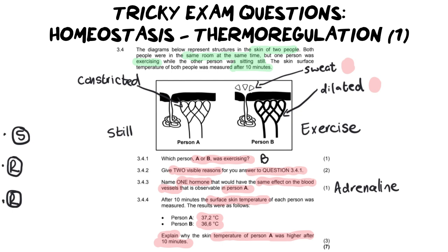So in order to write your statement keep this in your mind at all times and you can apply it to any explain question. For this one tell me what about this person A tells us they have a higher skin temperature. The thing that they have is they have constricted blood vessels.